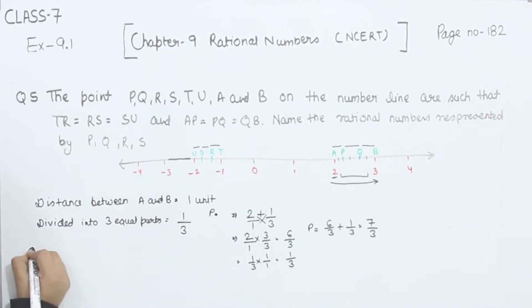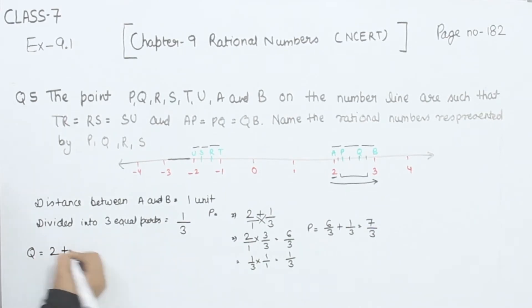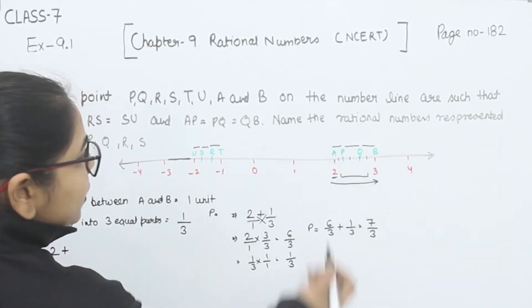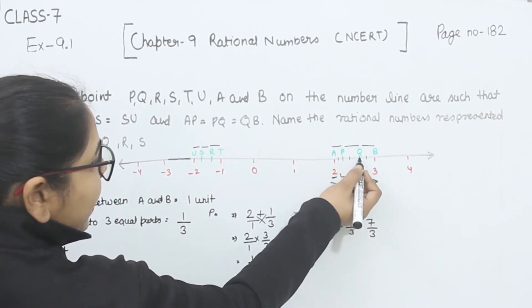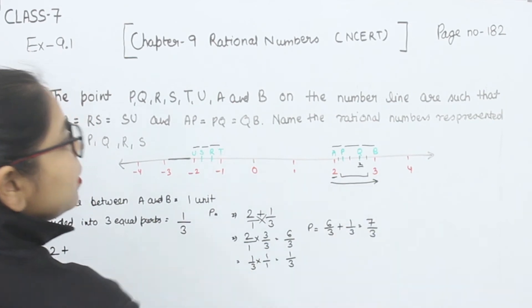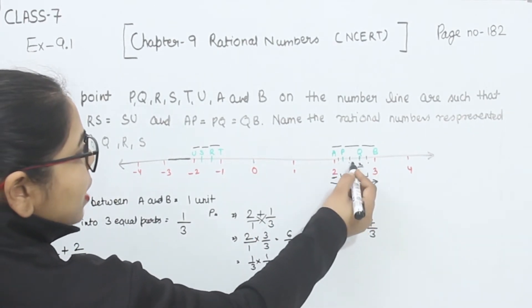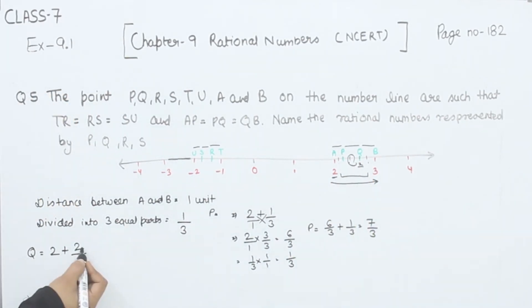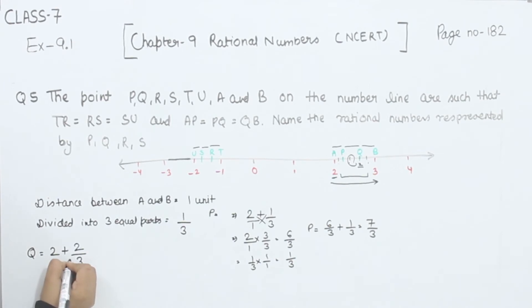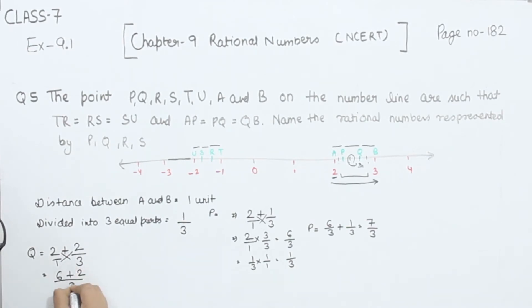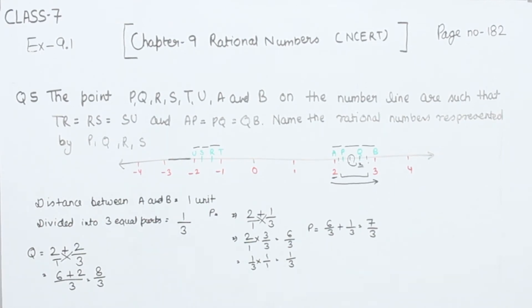Now we have to find the value of Q. We have 2 plus — now this one was 1/3 for the first part — for finding Q, this is the second equal point, so I am going to write 2 plus 2/3. So multiplying: 3 twos are 6, plus 2 ones are 2, and 3 ones are 3. So 6 plus 2 is 8, giving 8/3. So the value of Q is 8/3.